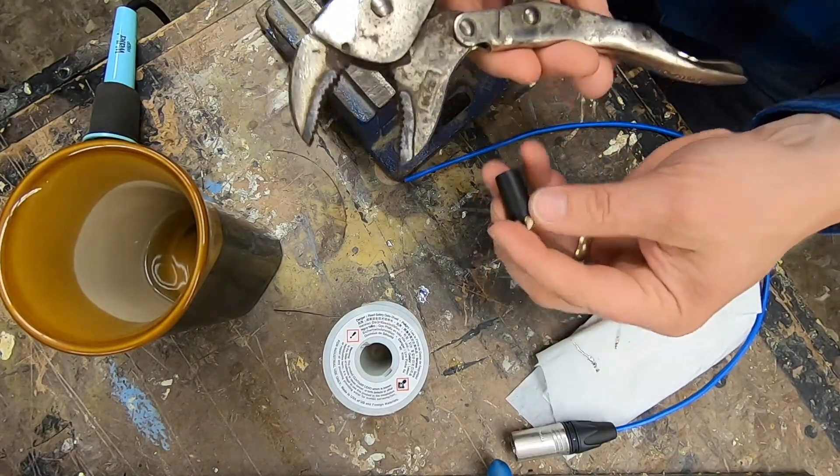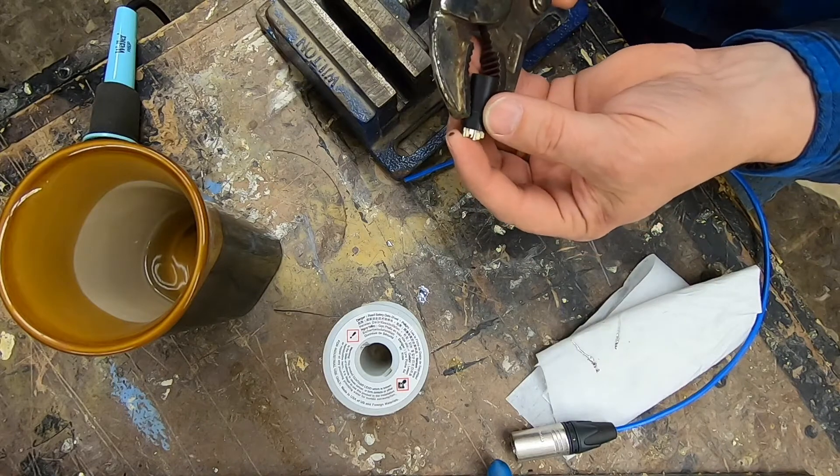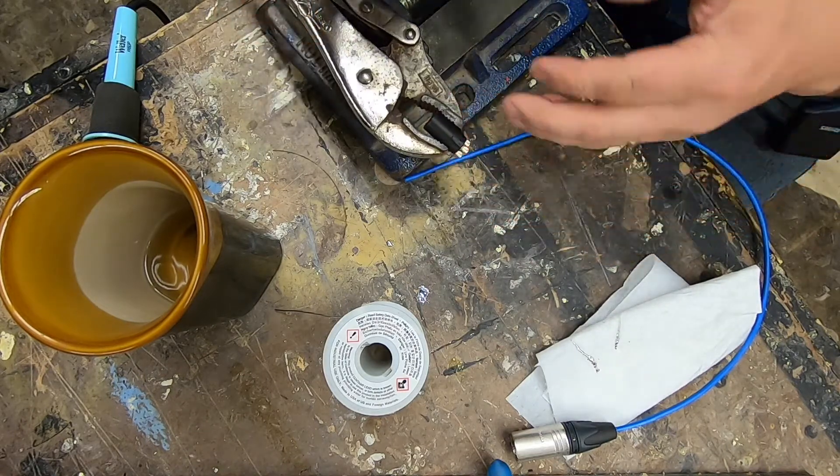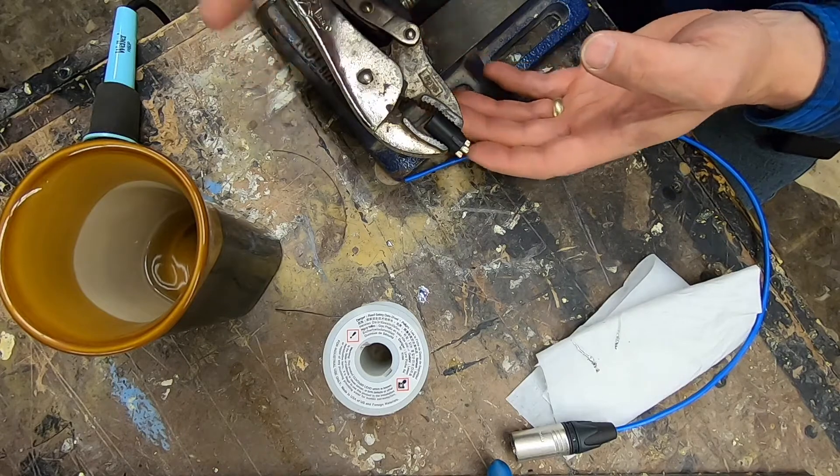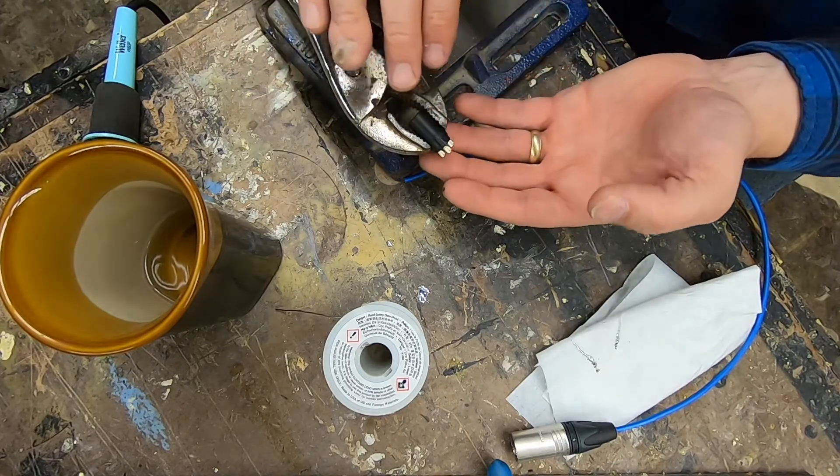When I'm out in the field, here's another tool that I use, just vise grips. Clamp vise grips on and I'll set the vise grips on top of a roll of tape or box. That way I can have this insert angling down.